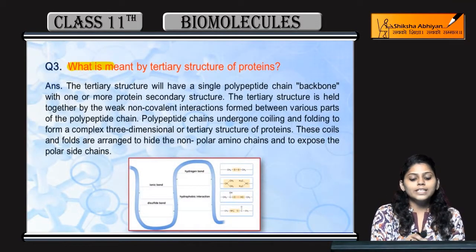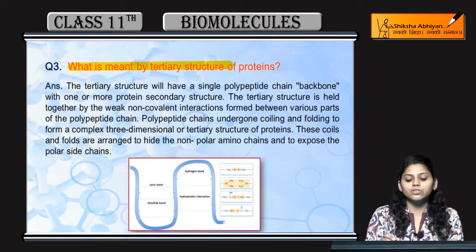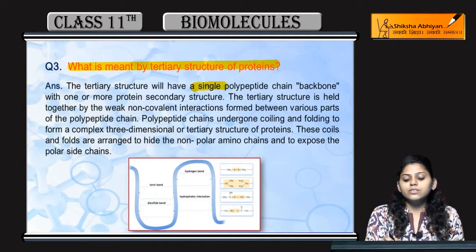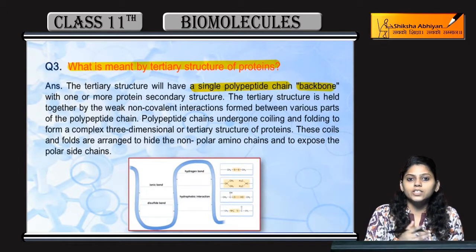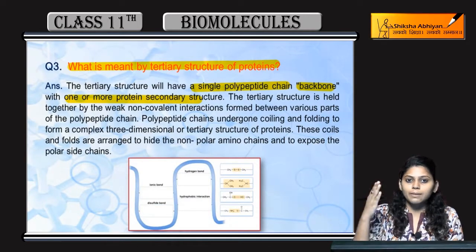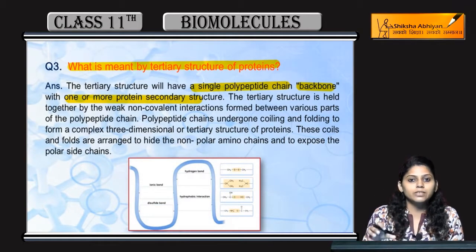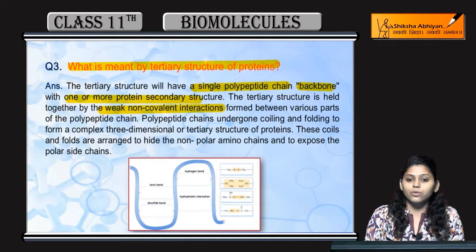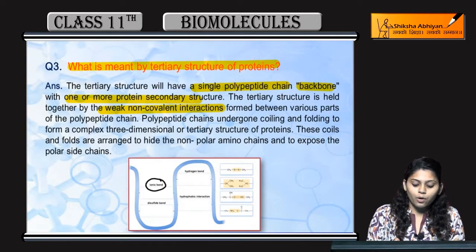Coming to question number 3: what is meant by tertiary structure of a protein? Tertiary structure means a single polypeptide chain is the backbone, and one or more secondary structures of a protein are present, which are held together by non-covalent bonds. Non-covalent bonds कौन-कौन से होते हैं? Ionic bonds,